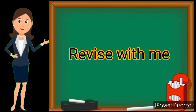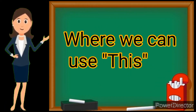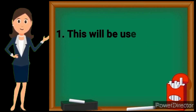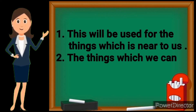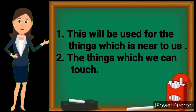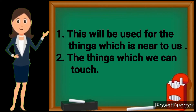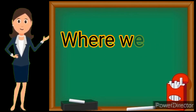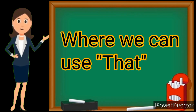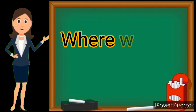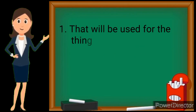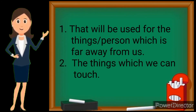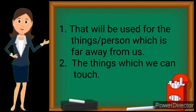Revise with me. Where can we use 'this'? 'This' will be used for things which are near to us, or things which we can touch. Where can we use 'that'? 'That' will be used for things or a person which is far away from us.